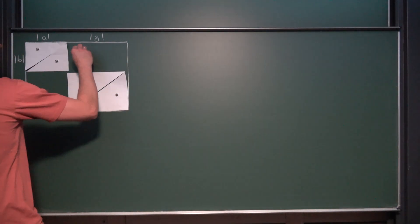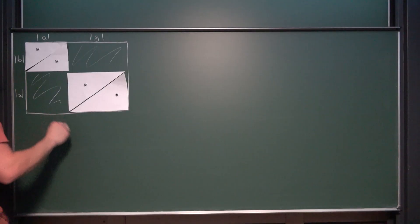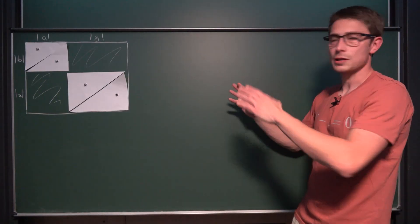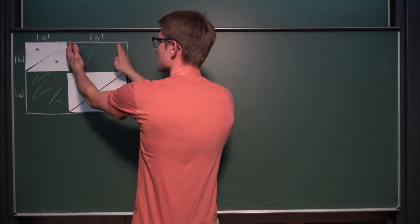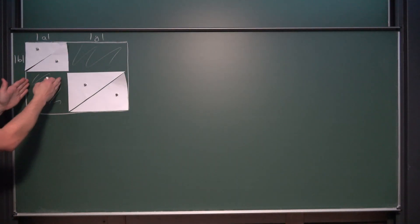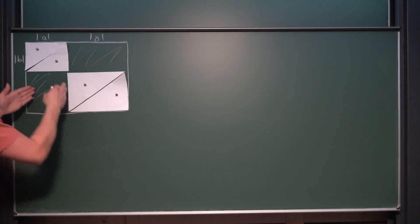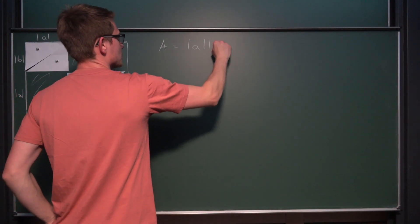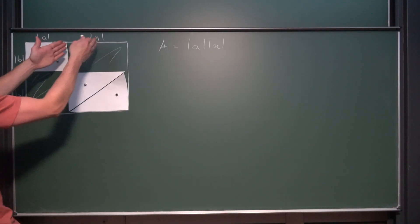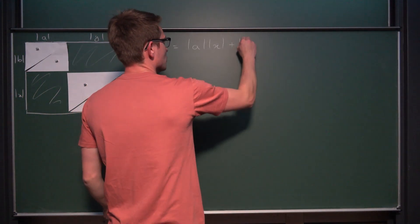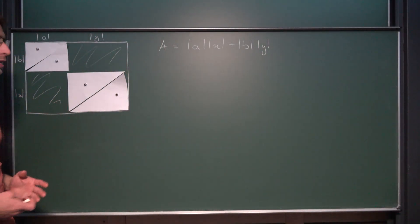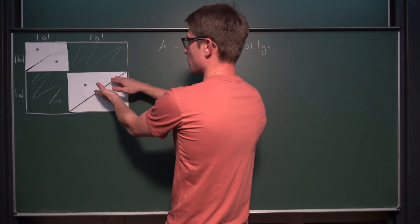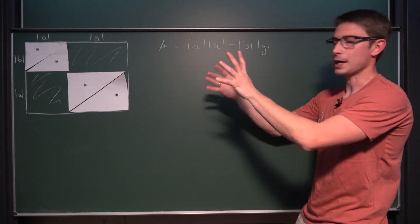Now why did we do something like this? We want to go ahead and take a look at those empty rectangles right here — the total area of those empty rectangles. To get the area of those, we just need the area of this one and the area of this one. The area of this smaller rectangle is going to be the absolute value of a times the absolute value of x, and also the other way around, this right here is the absolute value of b times the absolute value of y. This is what it looks like right now, and now we want to fumble around with this rectangle a little bit more.